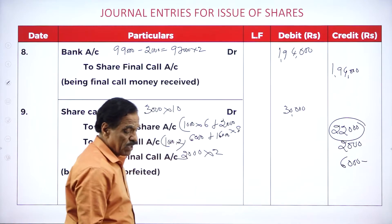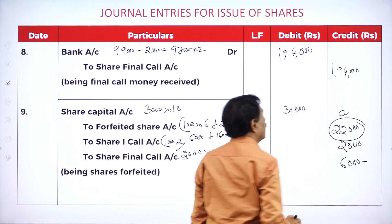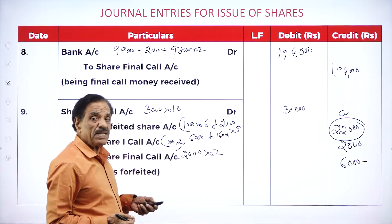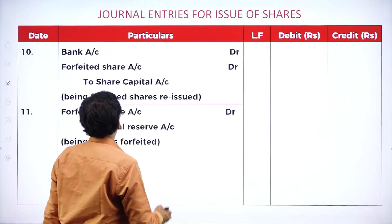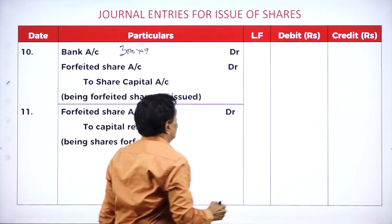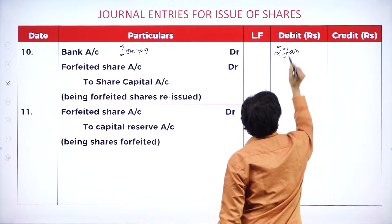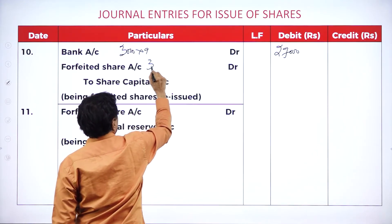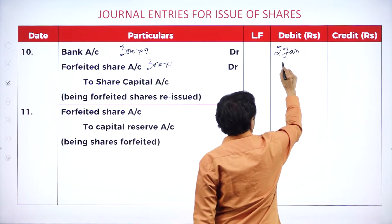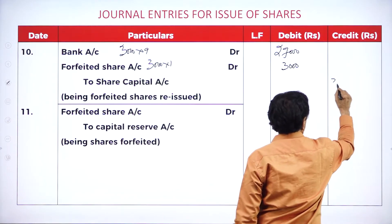The forfeited shares have been reissued. At what rate? At rupees 9. Bank account debit: 3,000 into 9 = 27,000. Forfeited shares account debit: 3,000 into 1 = 3,000. To share capital account: 30,000. Being forfeited shares reissued. Credit entry in forfeited shares account: 22,000.